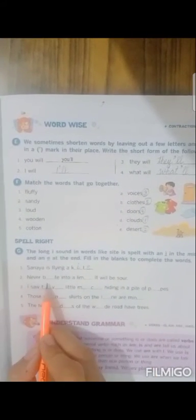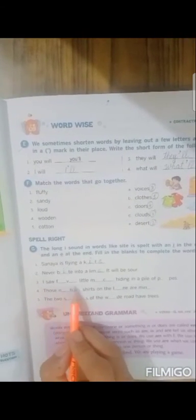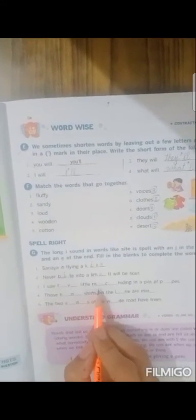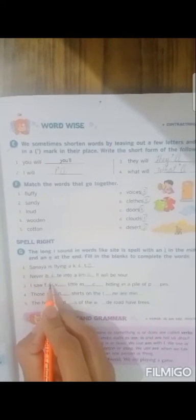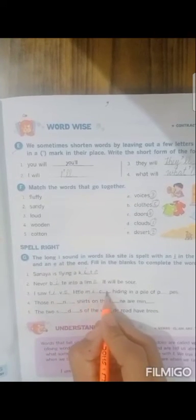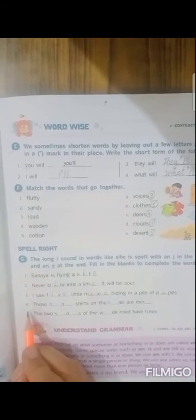Never dash into a dash, it will be sore. What will come? Never bite into a lime, it will be sore. In the first word, it will come I. Third sentence, I saw five little mice hiding in a pile of pipes.